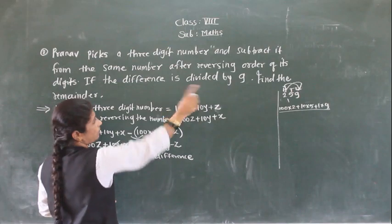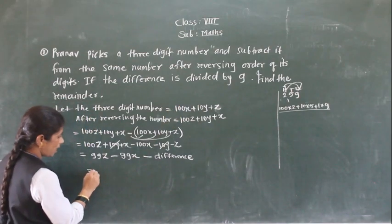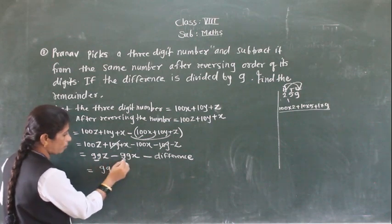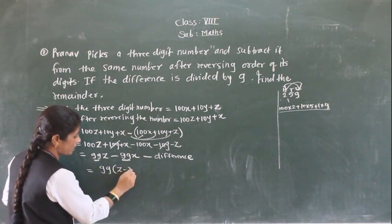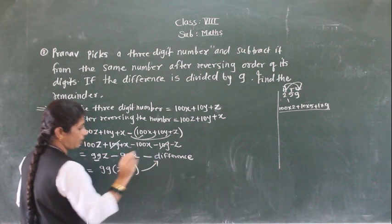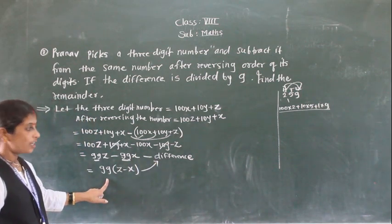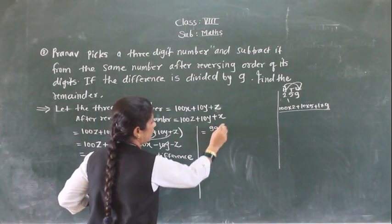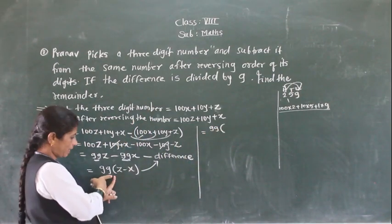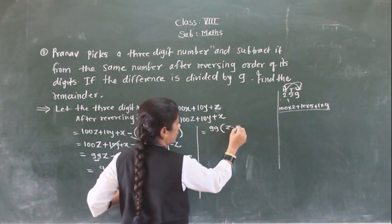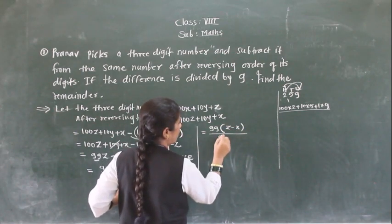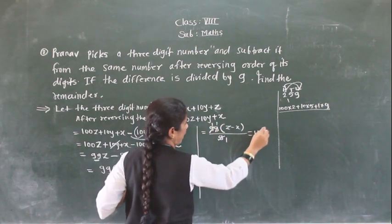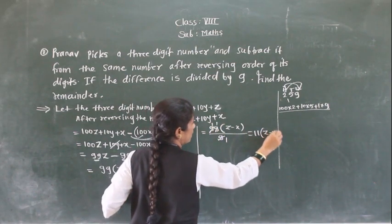Now the difference is 99z minus 99x, and 99 is common here. So the difference equals 99(z minus x). If this difference is divided by 9, we get 99(z minus x) upon 9, which gives 11(z minus x). So the remainder is 11(z minus x). Wait — actually when dividing 99(z-x) by 9, you get 11(z-x) exactly, with remainder 0.